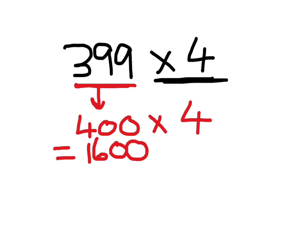But now we have to work out, what's the difference? How did we get our 399 up to 400? We added 1. So we have to work out what that is when we multiply it by 4. Well, you're probably saying right now, that's really easy. 1 times 4 is 4.